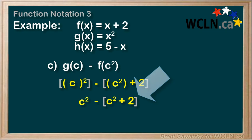It's good that we're in the habit of putting brackets around the function, as it reminds us, in this case, that the negative impacts everything in the brackets. So we simplify c² - c² - 2. And the c² cancel out, and we're simply left with -2.